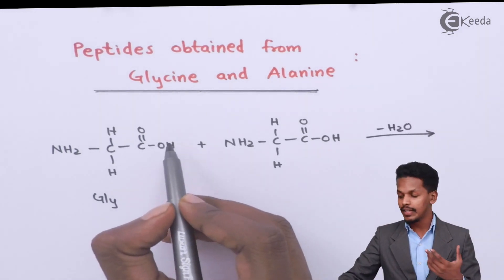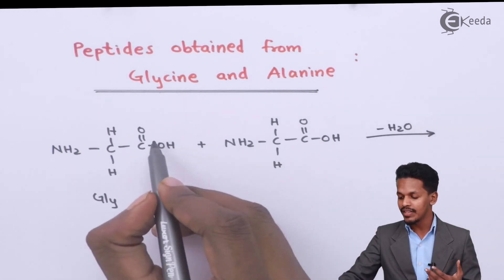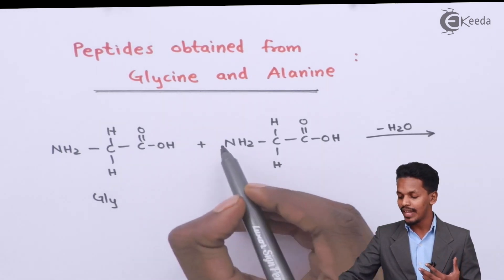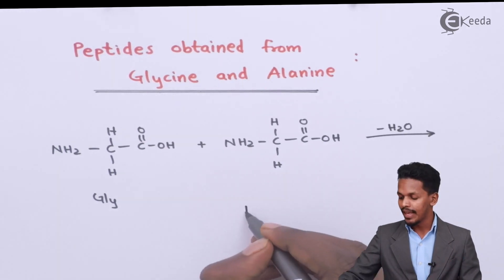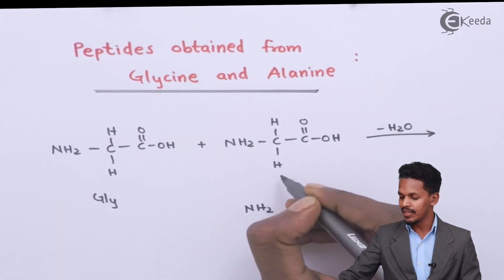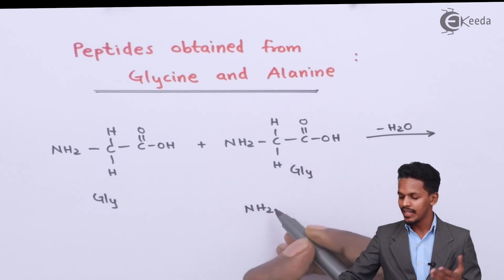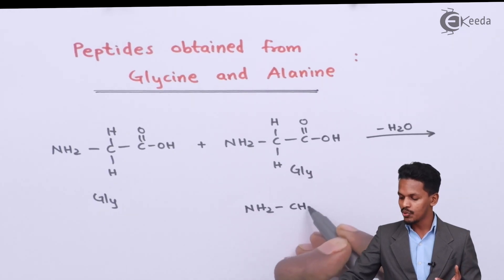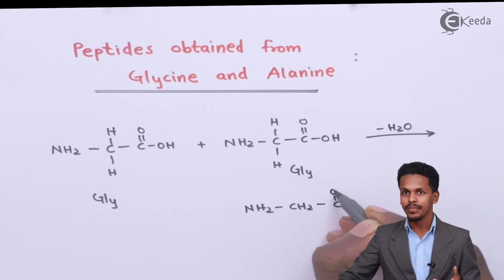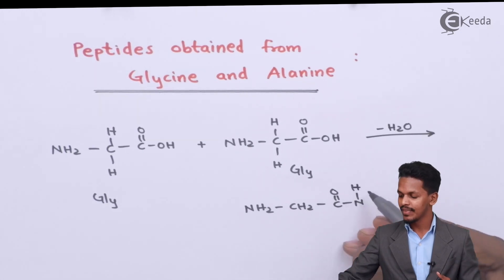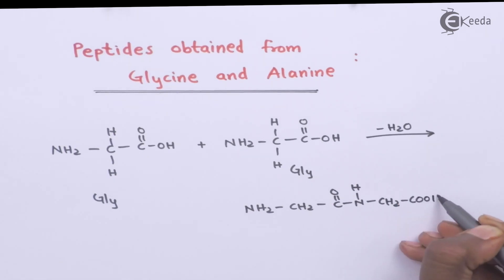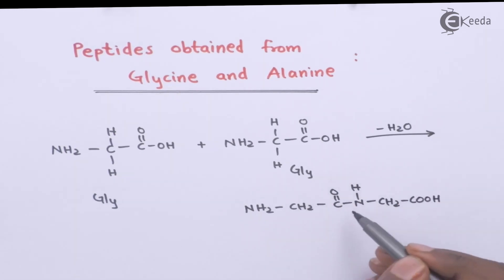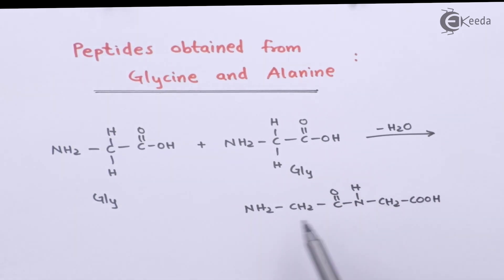There will be elimination of water — the OH will be removed and this hydrogen will be removed. The product that we could get is NH2-CH2-C(=O)-NH-CH2-COOH. So here we have got one peptide linkage and the overall molecule is called a dipeptide.